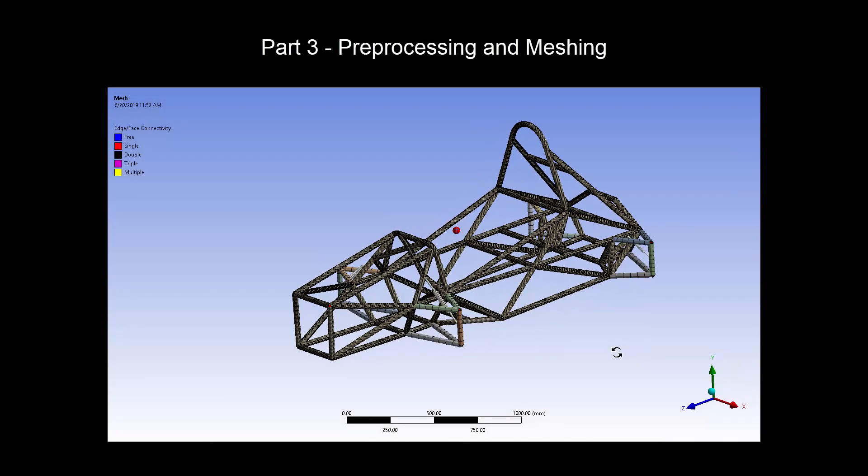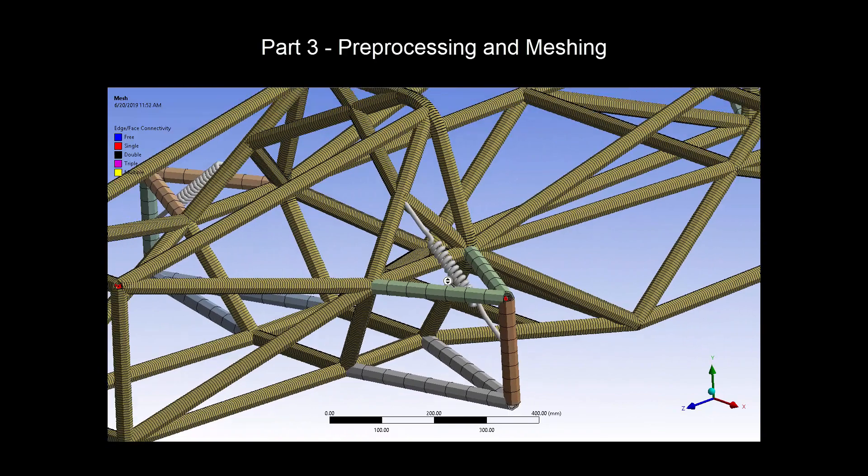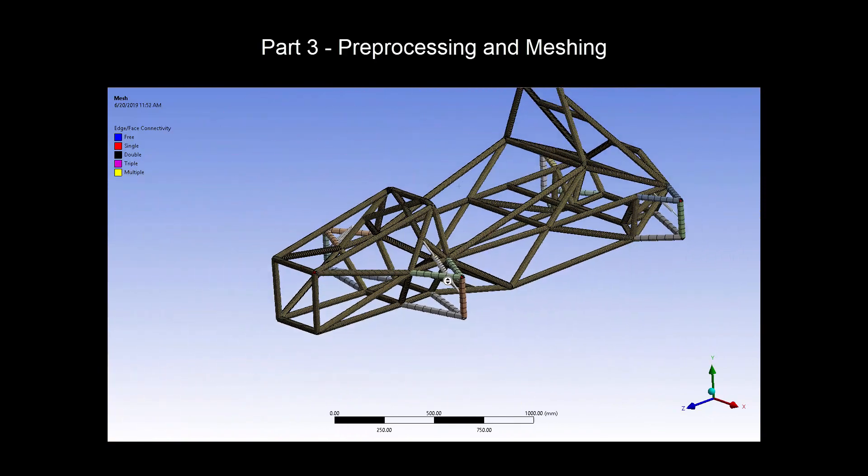Part 3 is focused on pre-processing after importing the model into ANSYS Mechanical, where we will assign joints and mesh the members.